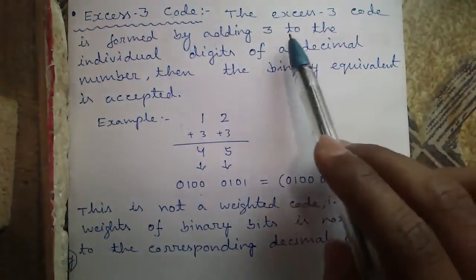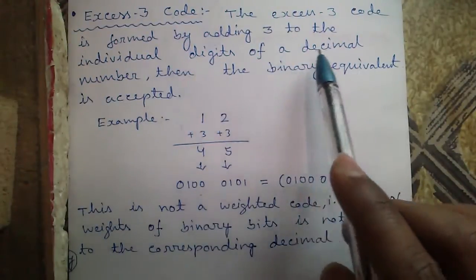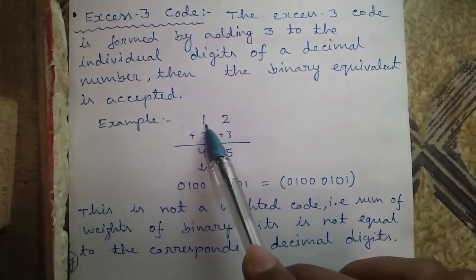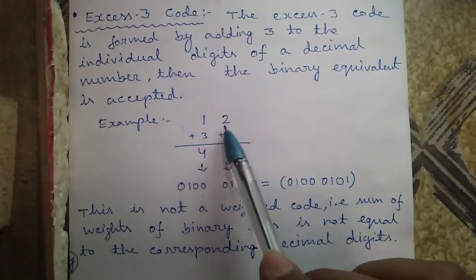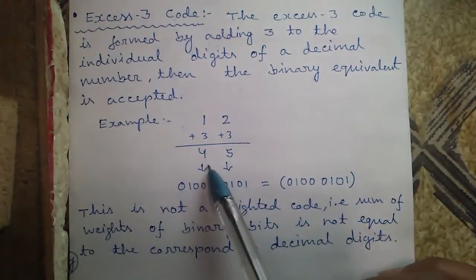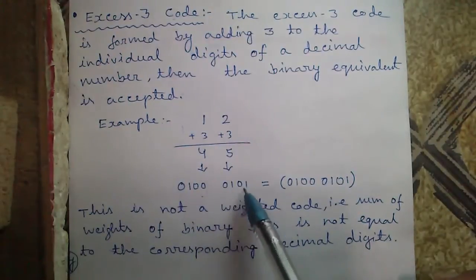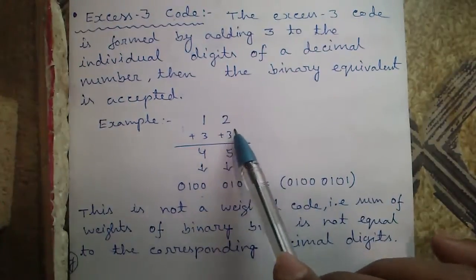XS3 code. The XS3 code is formed by adding 3 to the individual digits of a decimal number. Then the binary equivalent of that is accepted. So we will add 3 to each of the digits. So 1 plus 3 that is 4 and 2 plus 3 that is 5 and each is converted into binary. So 4 is 0100 and 5 is 0101. So together, this forms the XS3 equivalent of decimal 12.